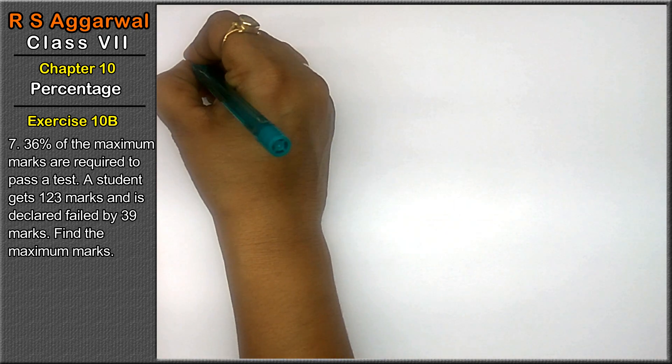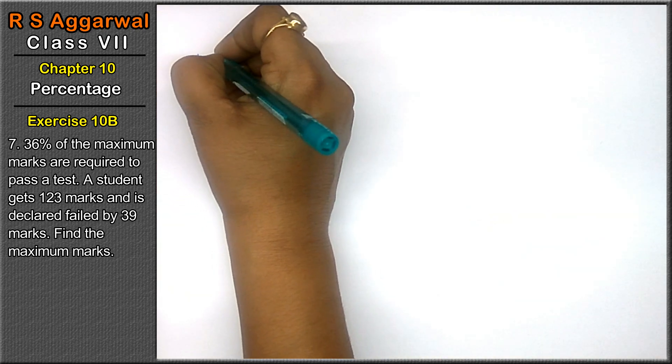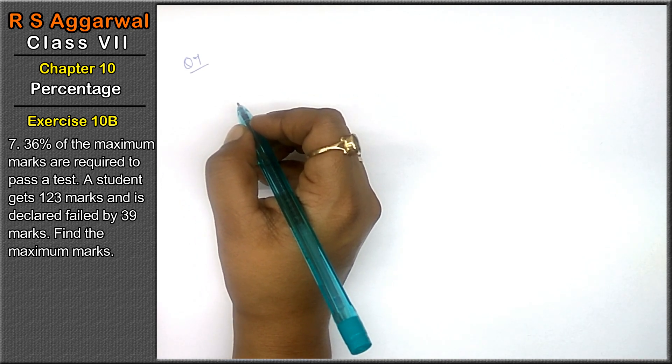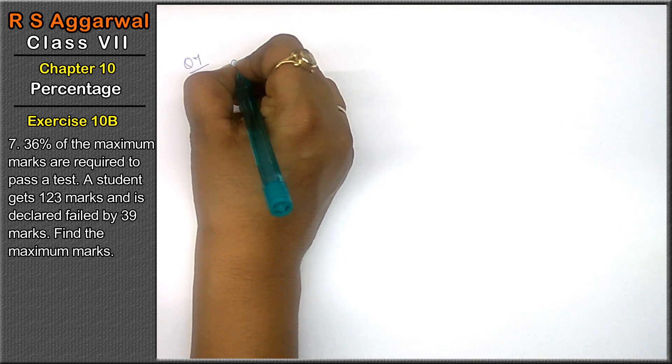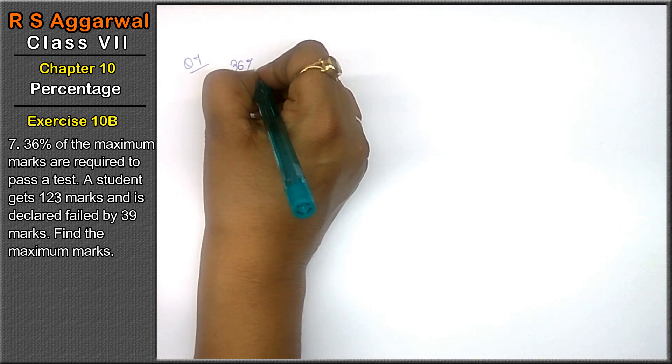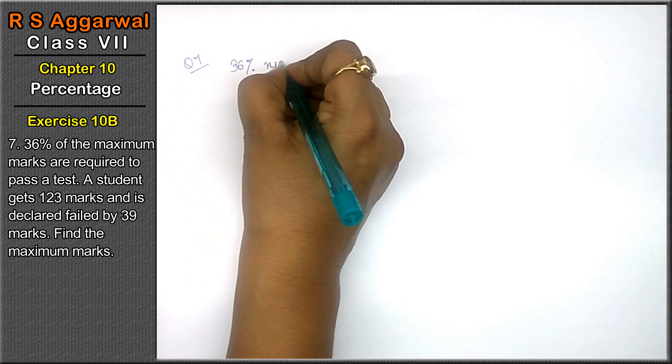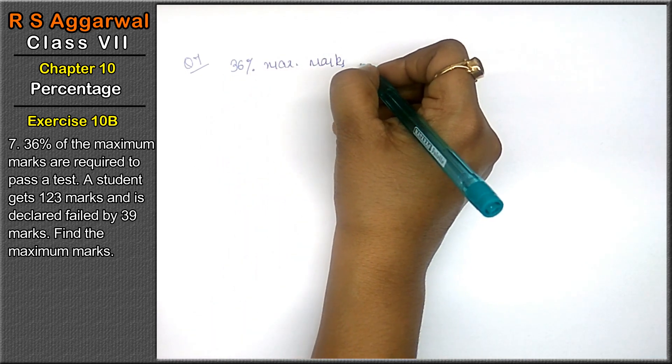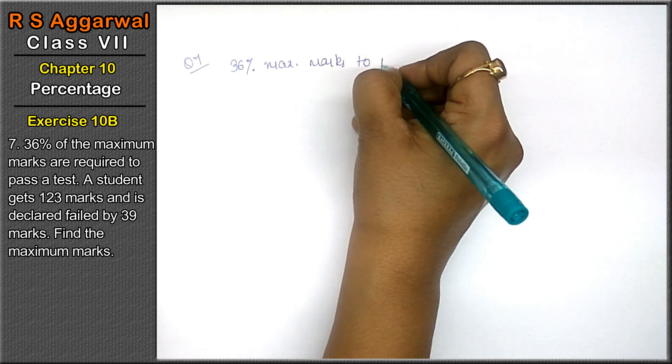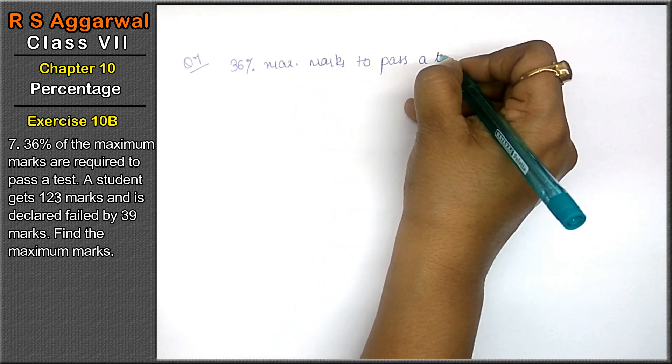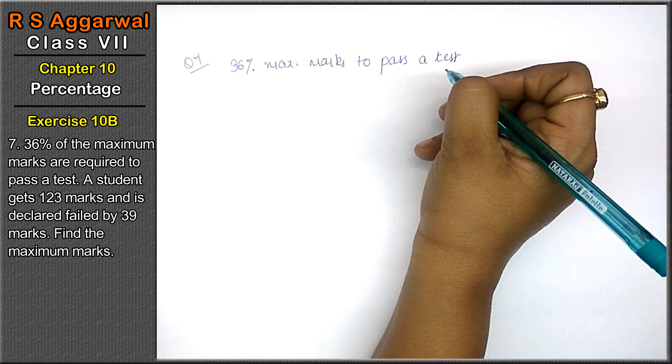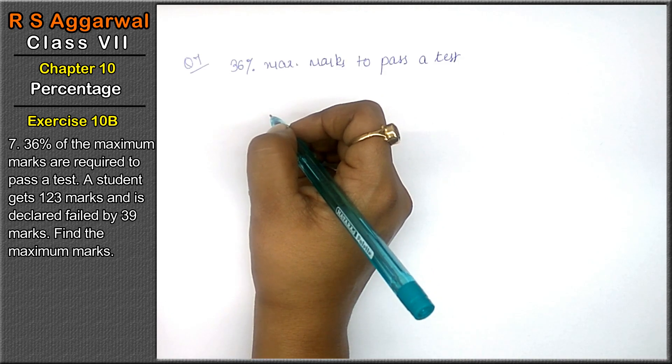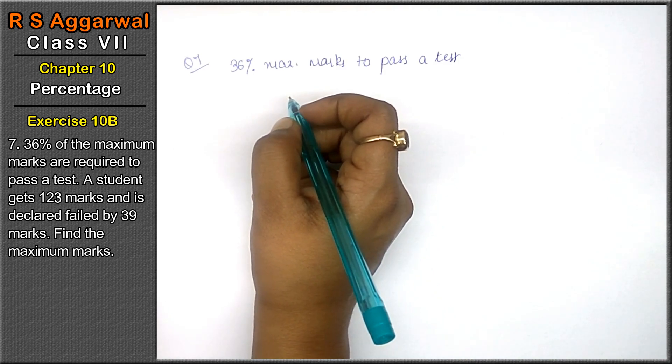Let's do question number 7 of exercise 10B. 36% of the maximum marks are required to pass a test. A student gets 123 marks and is declared failed by 39 marks.